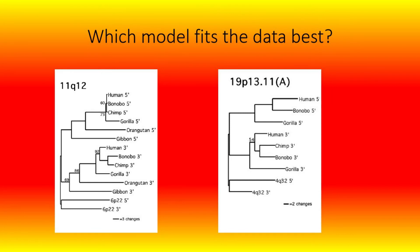The left-hand chart labeled 11Q12: the bottom one does fit common descent, but branch 5 doesn't quite match — the gorilla branch is close but the branch separates between the bonobo and chimpanzee, with humans and bonobos on the same side, which tends to go against common descent. The right-hand one labeled 19P13.11a matches common descent on both the top and bottom, except that chimpanzees are absent. So either these lines are not a result of common descent, or they got filtered out of chimpanzees. Both of these fit creation models.